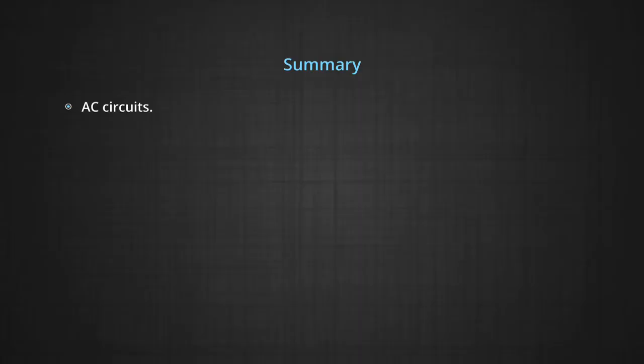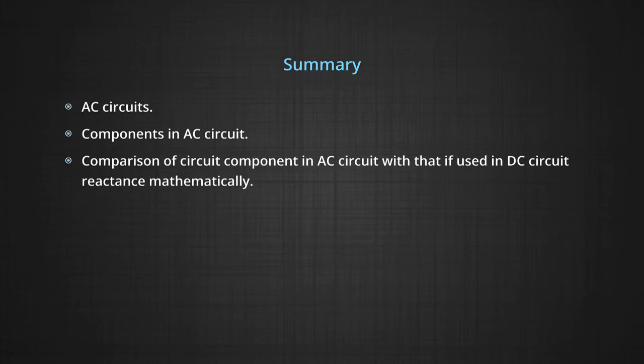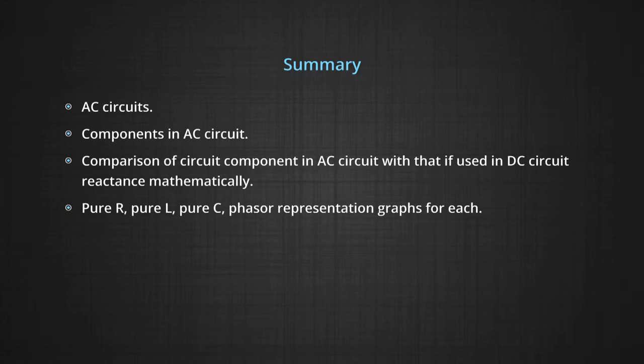Today, I am here to discuss module 6 of unit 4, that is alternating current electricity. Before going ahead, I must tell you what we have done in the previous module: AC circuit components, reactance, and mathematical expressions for pure R, L, and C.